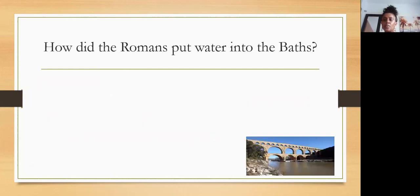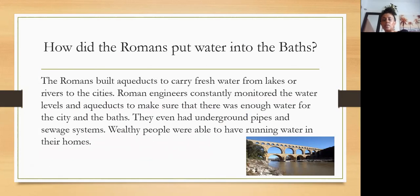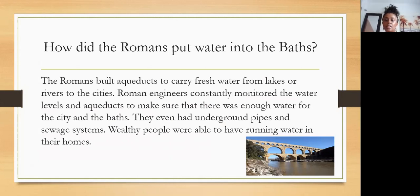How did they fill the baths with water? These baths were massive, not like the ones in your home. The Romans built aqueducts to carry fresh water from lakes or rivers to the city. Roman engineers constantly monitored the water levels in the aqueduct to make sure there was enough water for the city and the baths. They even had underground pipes and sewage systems, and wealthy people were able to have running water in their homes.